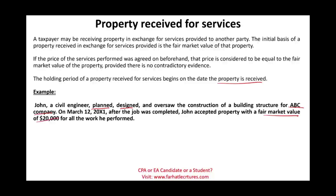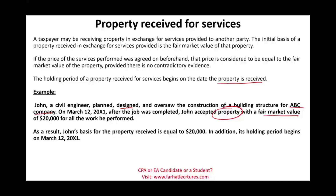There was no prior price agreement — John did not agree on a price for his work beforehand. He simply accepted property, perhaps a small piece of land, with a $20,000 fair value. Since the exchange is assumed to be between two rational parties, John's services are worth $20,000. Therefore, John's basis for the property received equals $20,000, and his holding period begins March 12, 20X1.